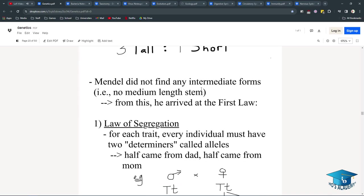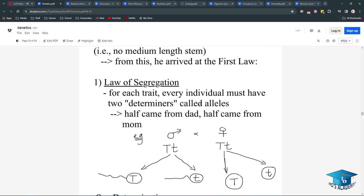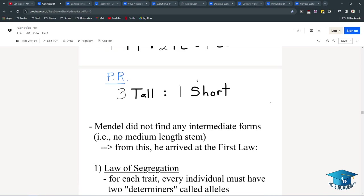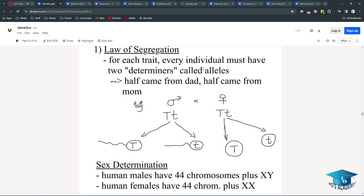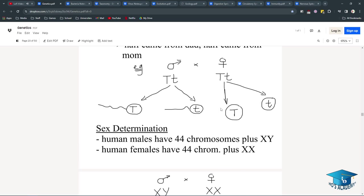Mendel did not find any intermediate forms yet. So, he came with the law of segregation, which showed that each individual must have two determiners called alleles, and half of them are from mom, and half of them are from dad.